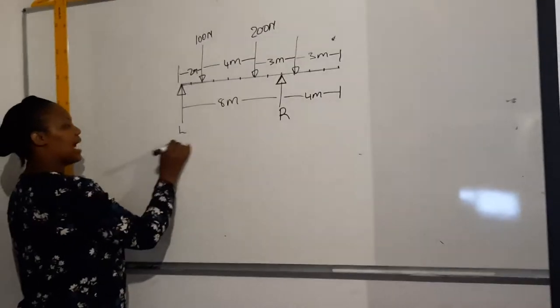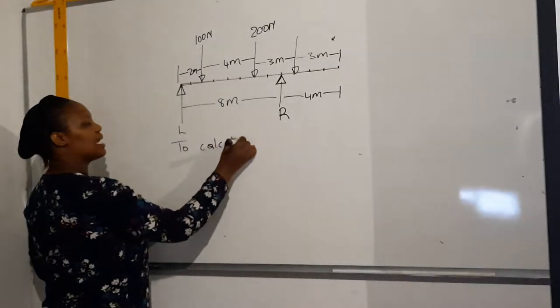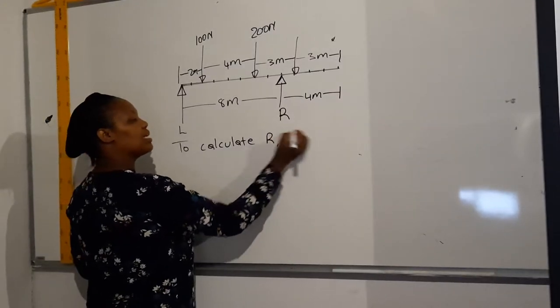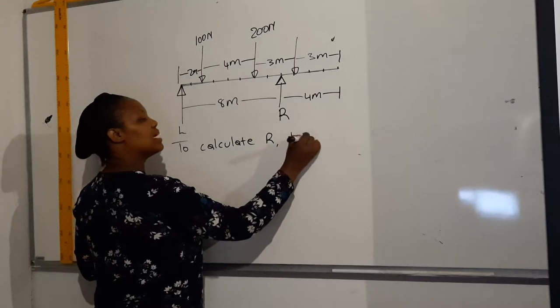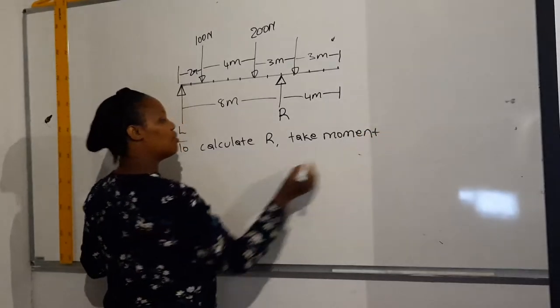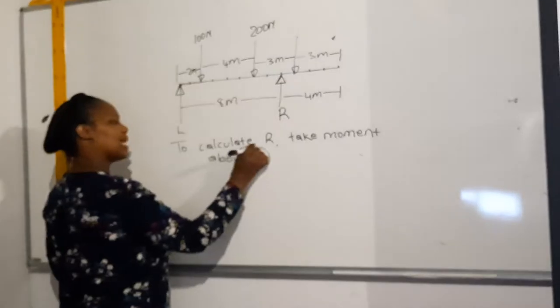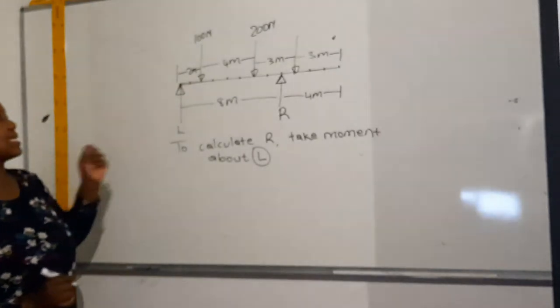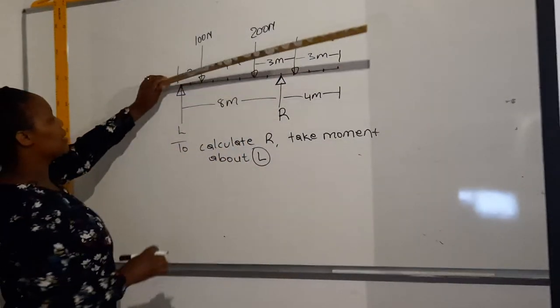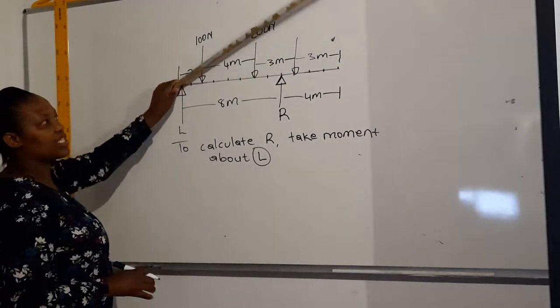Okay, so we are going to calculate R first. I'm going to write it down here. To calculate R, we assume that, or let me rather say, we take moments about L. So we assume that L is the pivot.